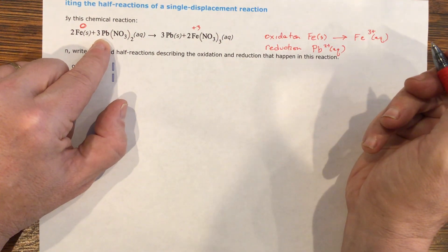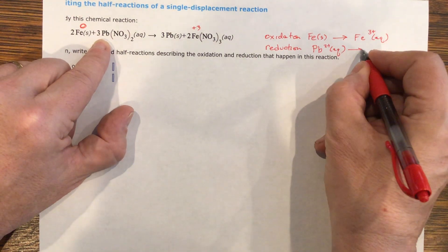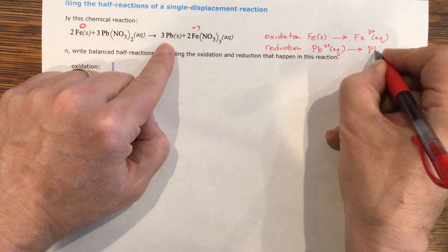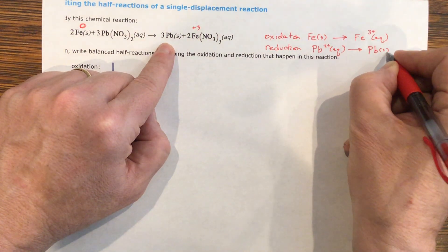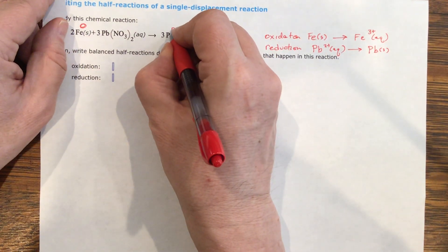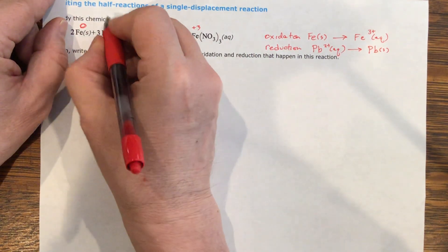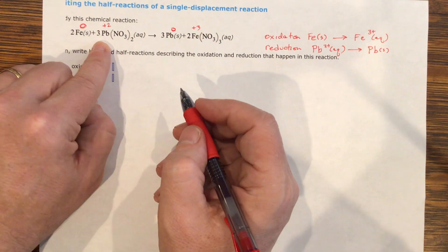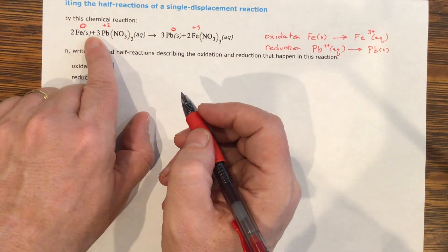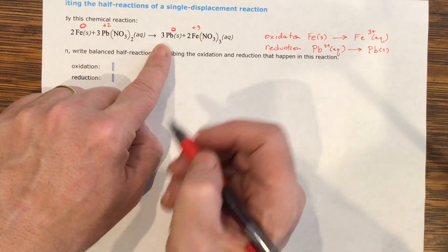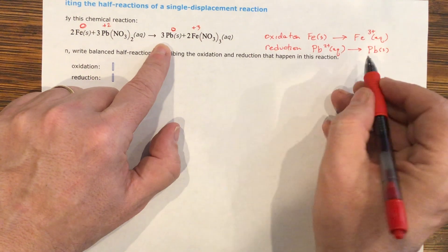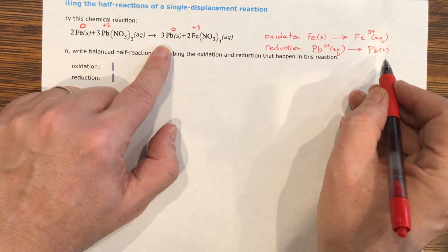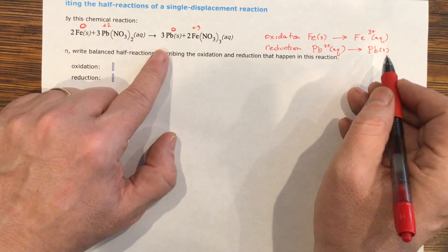And on the other side, you're going to end up with lead metal. So remember, this one is zero, and this one was positive two. So positive two went down to zero. This is reduced. If it drops in charge, it's reduced. And so your reduction step would be the lead going to the solid lead.